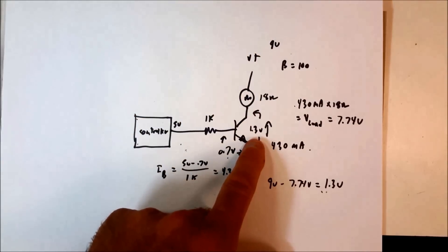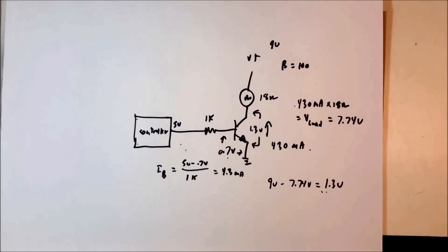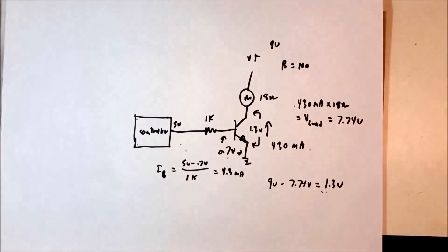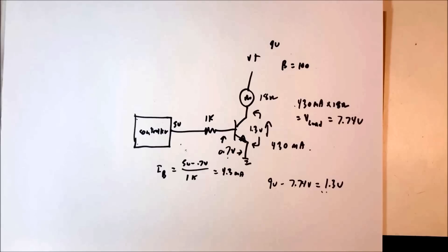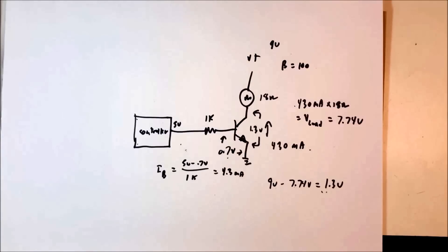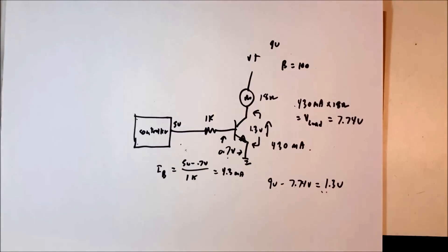If we have 1.3 volts across the transistor and 430 milliamps, we're going to have some heating of the transistor occurring. The transistor will heat under any conditions, but it heats less when the voltage across it is minimal. So in this case, the transistor is not saturated.